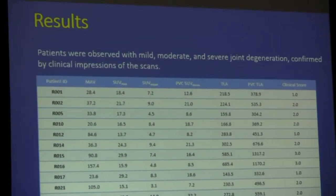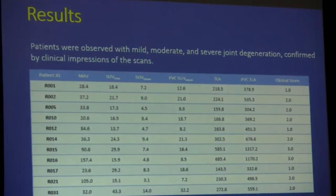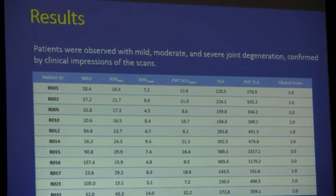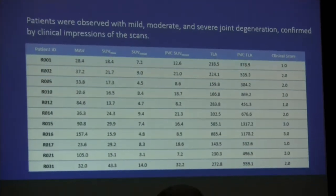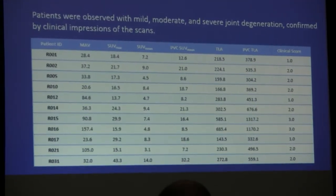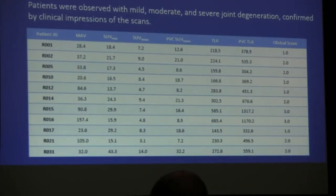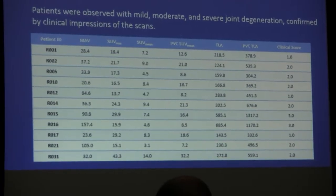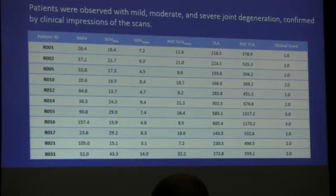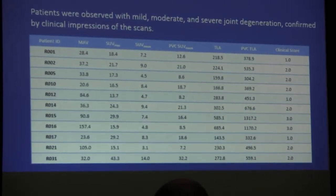These are our results. The patients were observed with a range of degeneration. The first six columns represent the six quantification values provided by Grover, and the last column to the right is the clinical score.